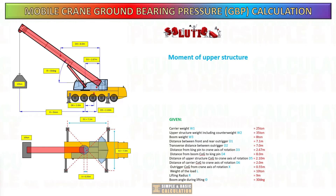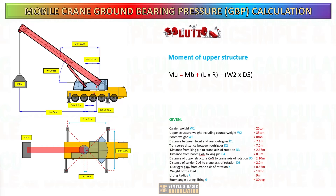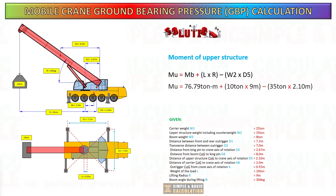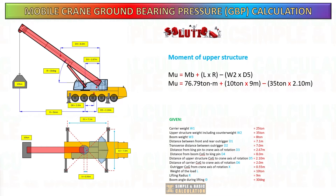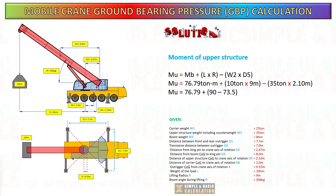Next, calculate the upper structure moment. To get this, you need the value from the boom moment, the load weight and lifting radius, the weight of the upper structure, and its distance to the center of crane rotation.